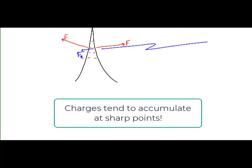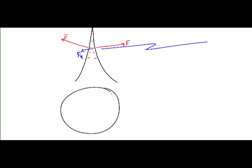And in fact, it's easier to have discharges from sharp points than it is to have discharges for the same amount of charge on less curved surfaces.